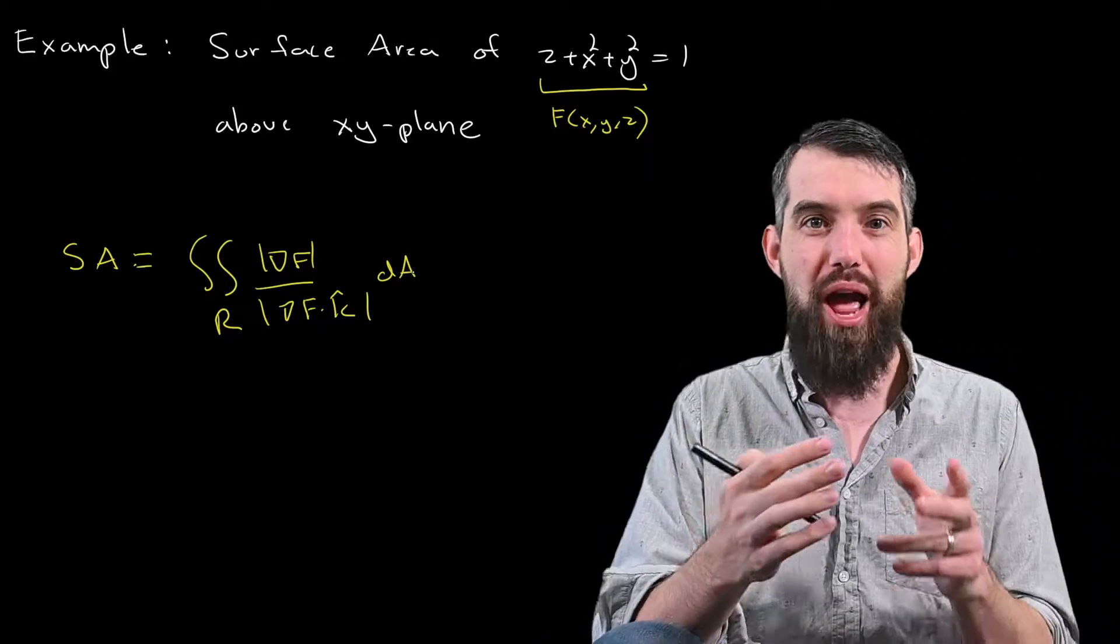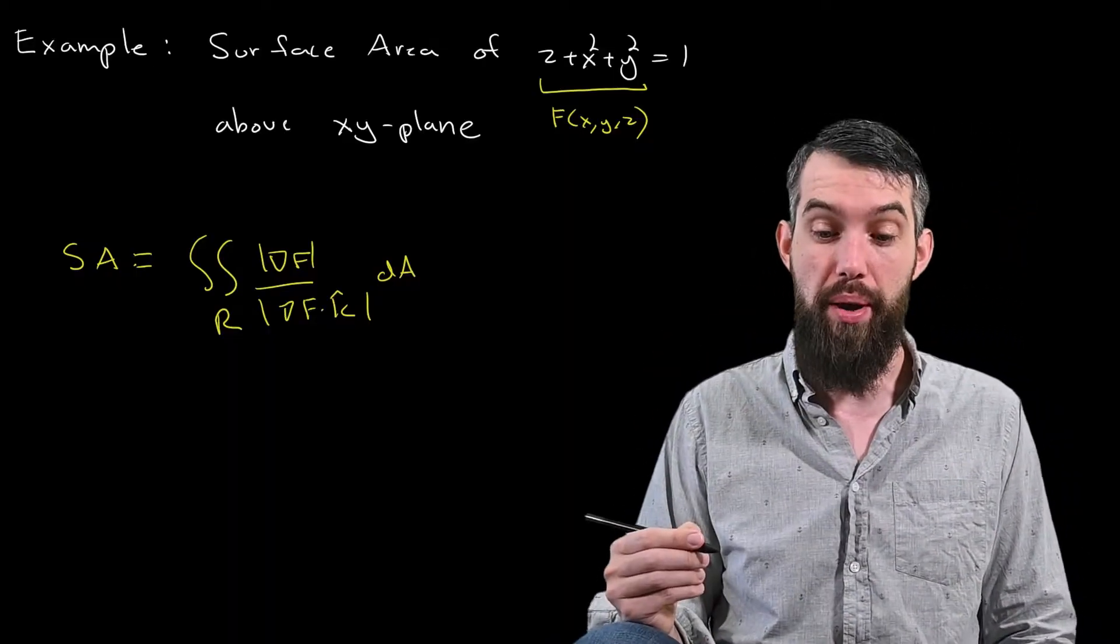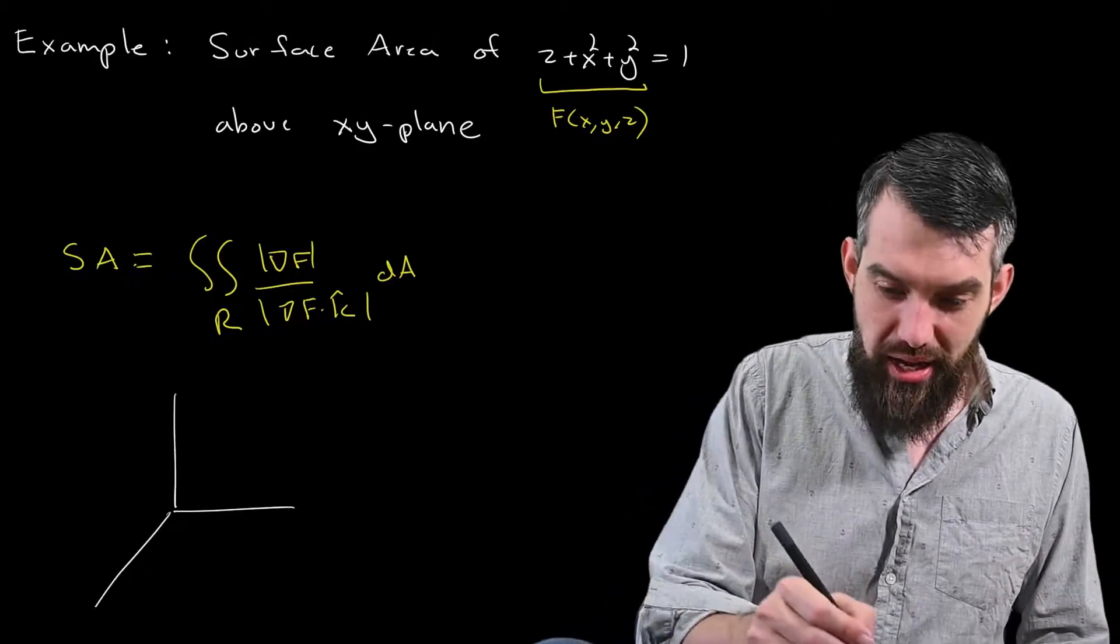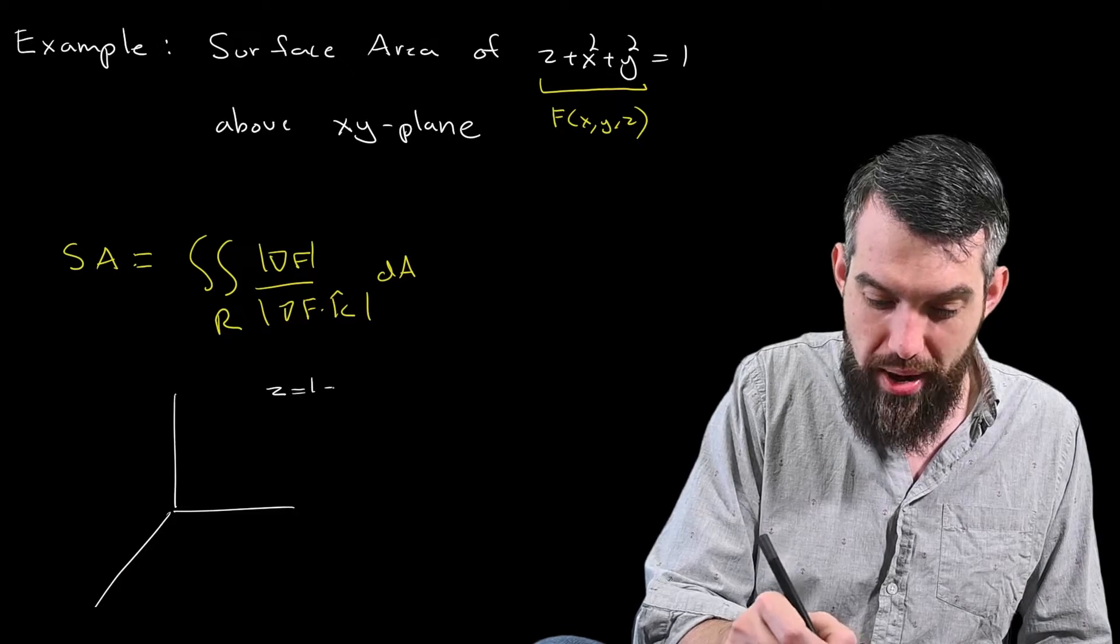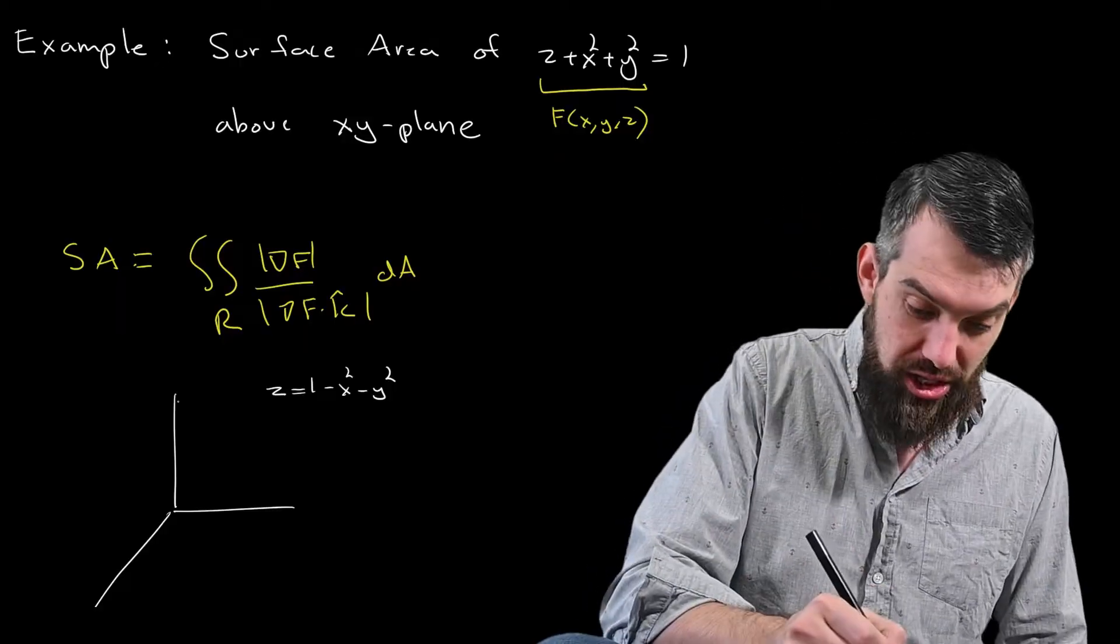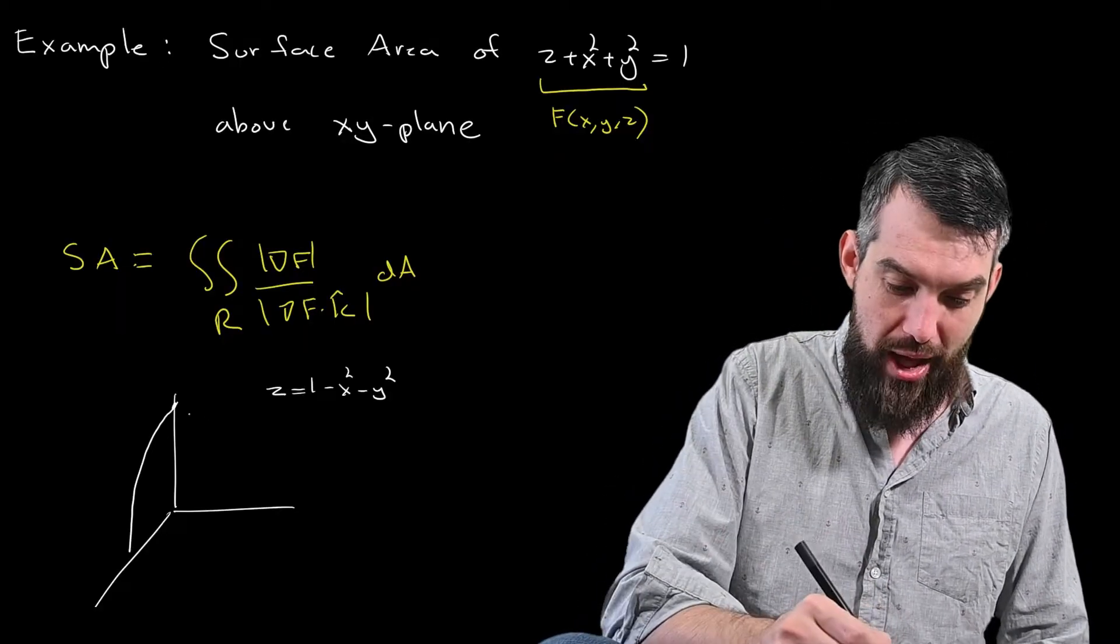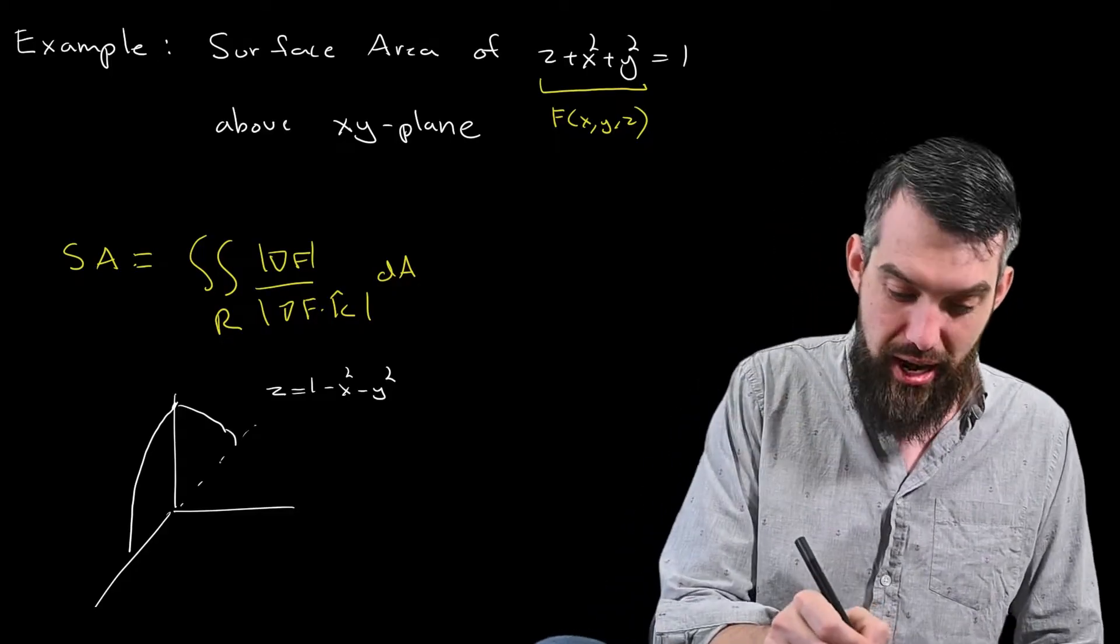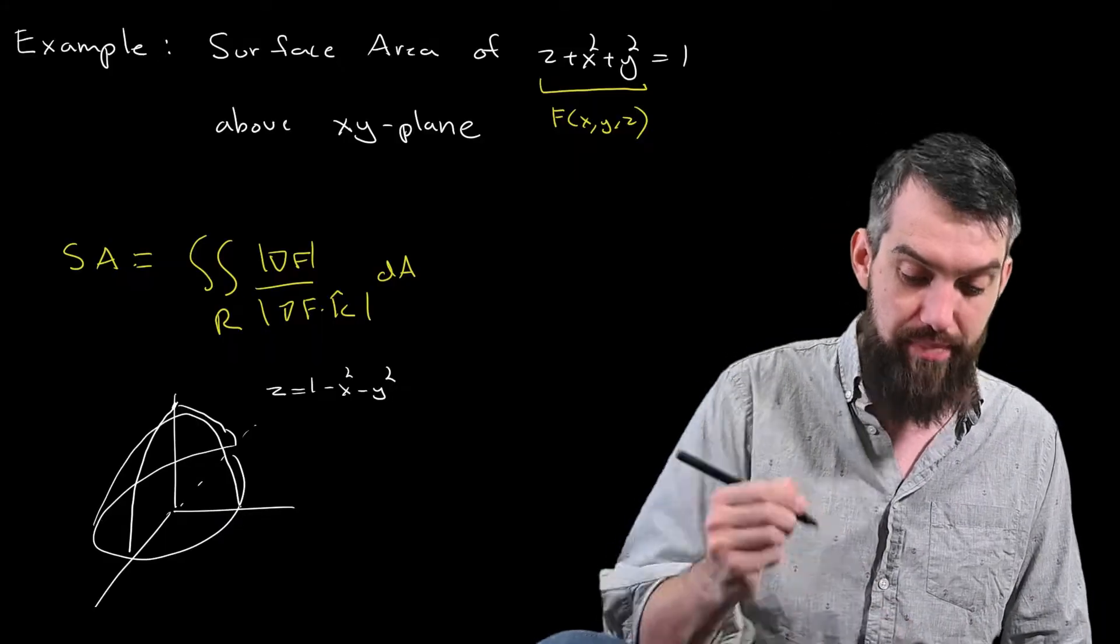So this is the formula we're going to use, but I want to try and sketch it first just to have a quick visualization of what's going on. I can manipulate this by taking the x squared plus y squared to the other side and write this as 1 minus x squared minus y squared. It's a parabola where I start up at some point 1, and then I drop down as a parabola going down like this. It forms a sort of nice circular shape, and I get a nice little parabola.